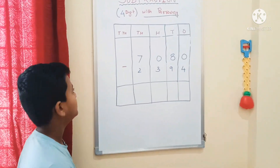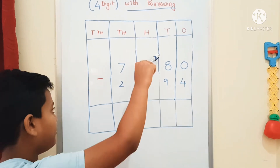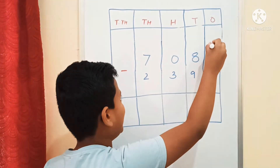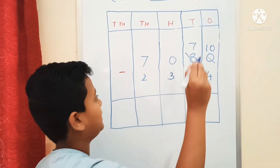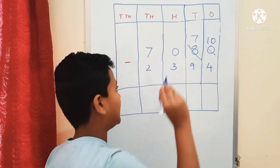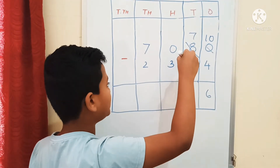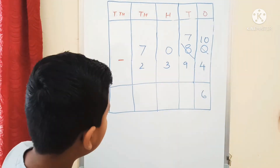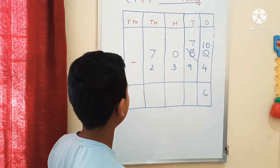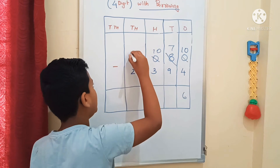Let me explain once again. We start with the 1's place: we cannot subtract 4 from 0. We go to the 10th place. In the 10th place, we have 8 that we can borrow. We borrow 1 tenth: this 0 is now 10, and after borrowing, this 8 is 7. Starting from the 1's place: 10 minus 4 is equal to 6. We go to the 10th place: we cannot subtract 9 from 7. We go to the 100th place, but we have 0 there, so we can't borrow. We go to the 1000th place: we have 7. We borrow 10 hundredths: this 0 is now 10, and after borrowing, this 7 is 6.